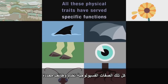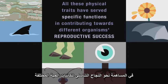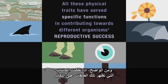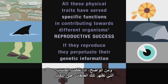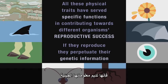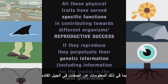All these physical traits have served specific functions in contributing towards different organisms' reproductive success. And clearly, if the organisms that exhibit these traits manage to reproduce, they perpetuate their genetic information, including the information for the traits, in the next generation.